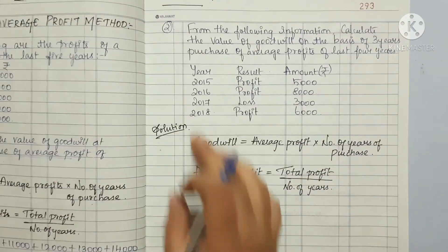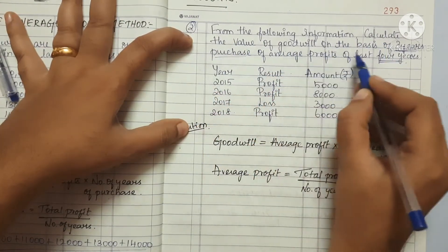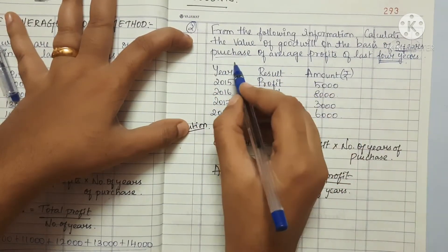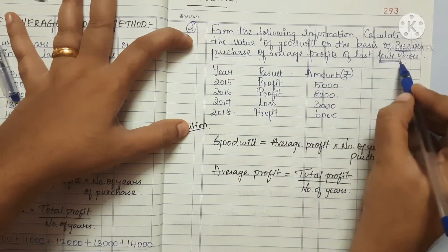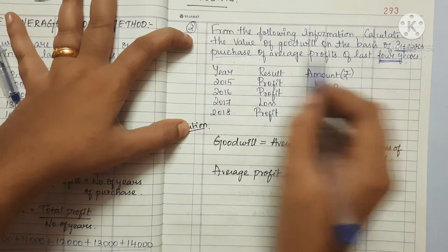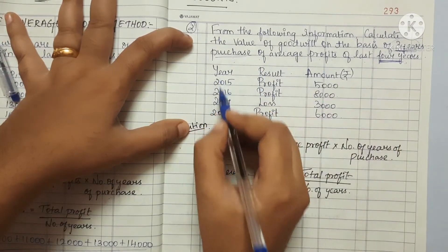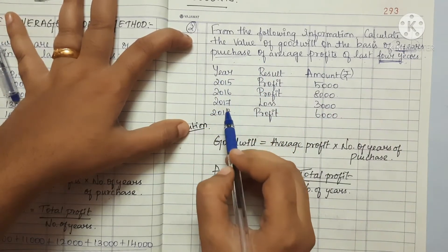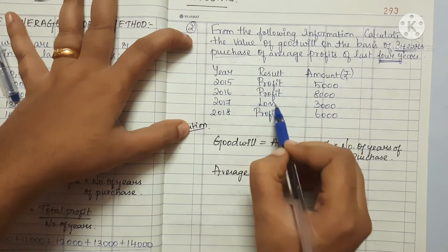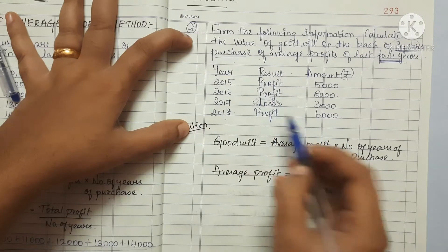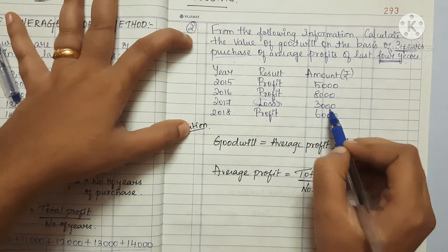Let's look at the next question. From the following information, calculate the value of Goodwill on the basis of 3 years of purchase of average profit of the last 4 years. The years are 2015, 2016, 2017, 2018. The amounts are 5,000, 8,000, and the third one is a Loss of 3,000, and 6,000.